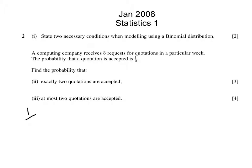Part 1: State two necessary conditions. My first condition will be a fixed number of trials, and my second condition will be that the probability of success is constant.